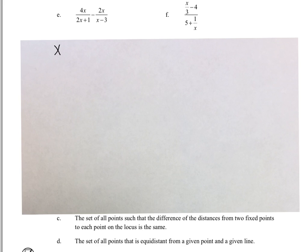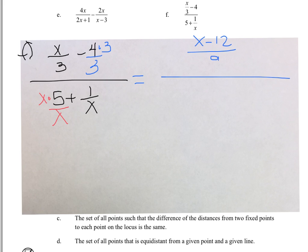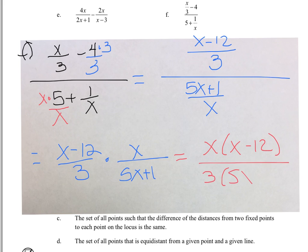F is a complex fraction, so we need to make one fraction in the numerator and one fraction in the denominator. We need a common denominator in the numerator and a common denominator in the denominator. So we have X minus 12 over 3 in the numerator, and 5X plus 1 over X in the denominator. When you divide by a fraction, that's the same as multiplying by the reciprocal. Nothing simplifies, so that's X times X minus 12, divided by 3 times 5X plus 1.